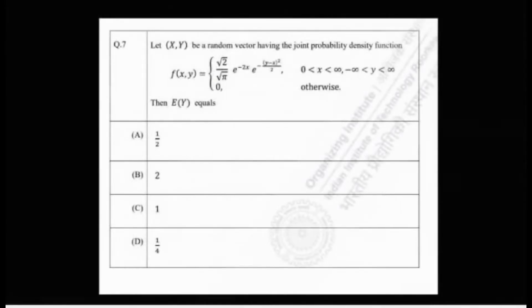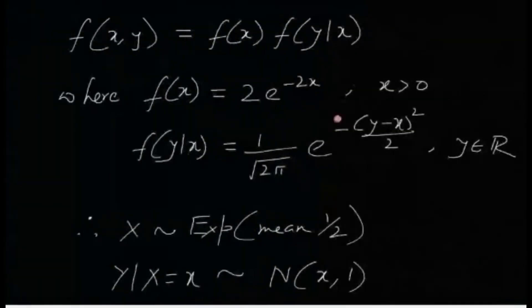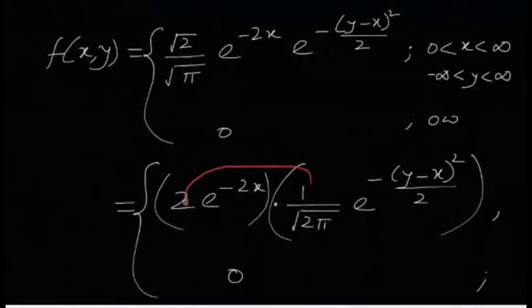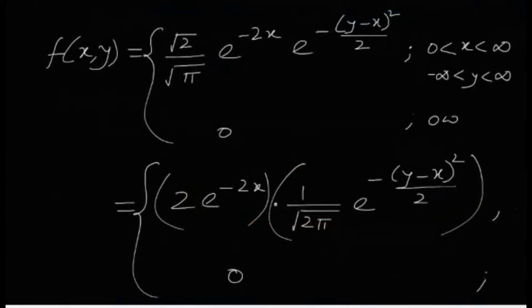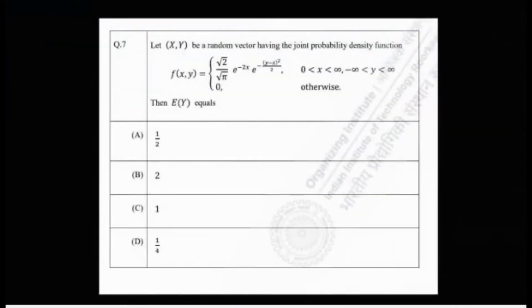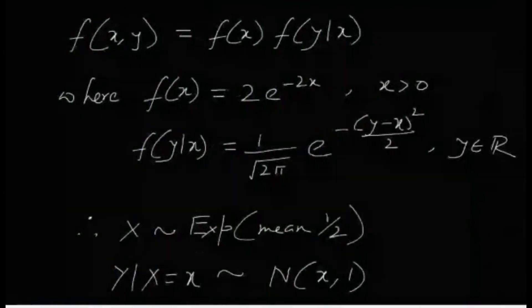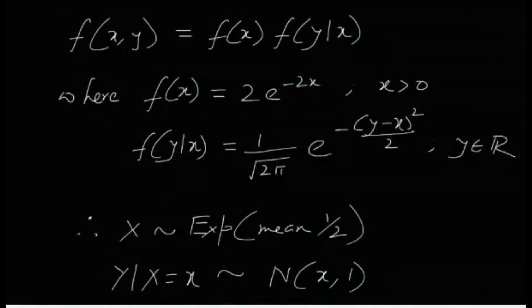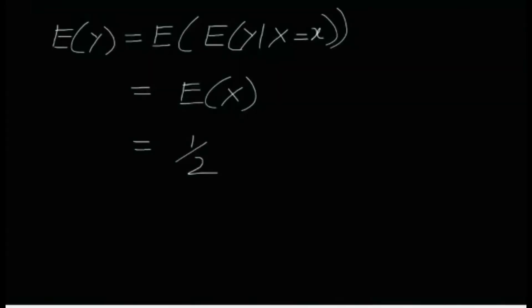The only thing that might be problematic is if you don't notice this joint PDF can be written in this very beautiful form. Then you might be under the impression that you have to calculate the expectation using the integral, double integral and all that stuff, and it might cause a lot of problem. So once you figure that it's actually nothing but the product of the marginal and conditional, then it's very easy. So there you have it, the solution to this problem. Do like, share and subscribe to the channel for more exciting problems. See you till next time.